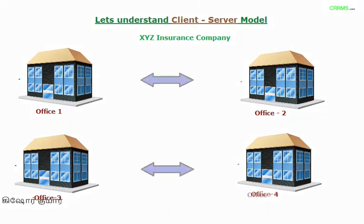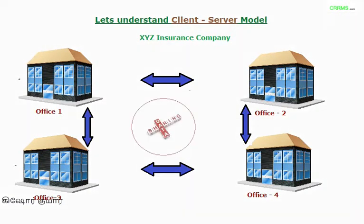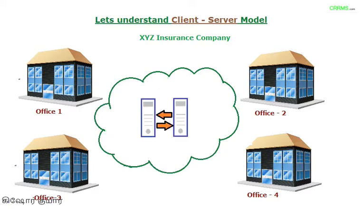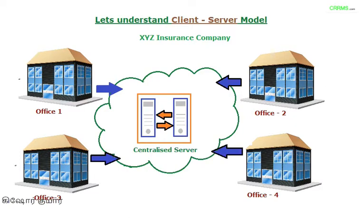XYZ Insurance Company has four different offices across four cities with the same setup, but the constraint is that data sharing is not possible across locations. In a centralized model, the centralized server is managed remotely and all office locations can access it via the internet, servicing customers seamlessly as one big entity with no single point of failure.